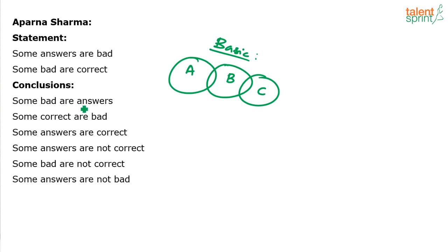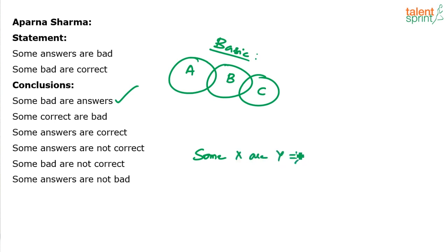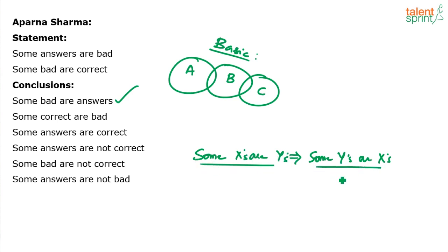Now, some bad are answers. I think we don't need to check a diagram for this one. If some A's are B's, the definite conclusion is some B's are A's. In general, if some X are Y, that implies some Y are X — it's always true. So, some answers are bad would mean some bad are answers. You don't have to even check a diagram for that.